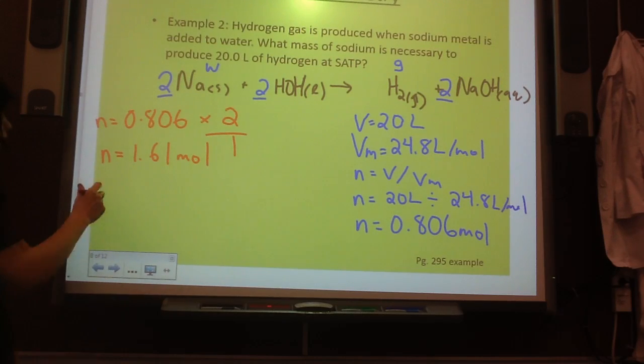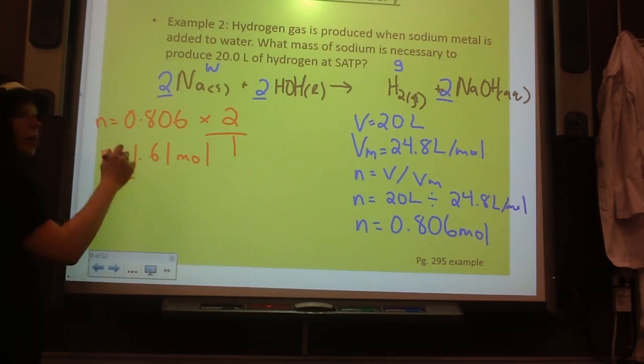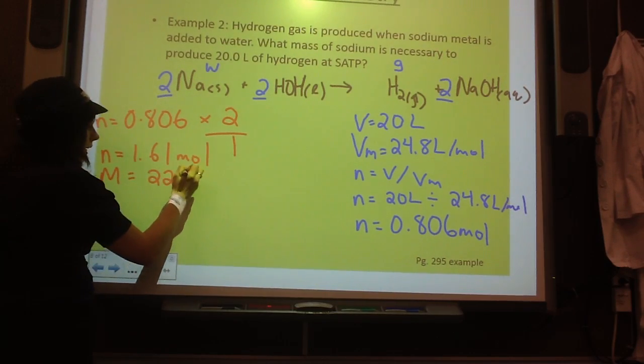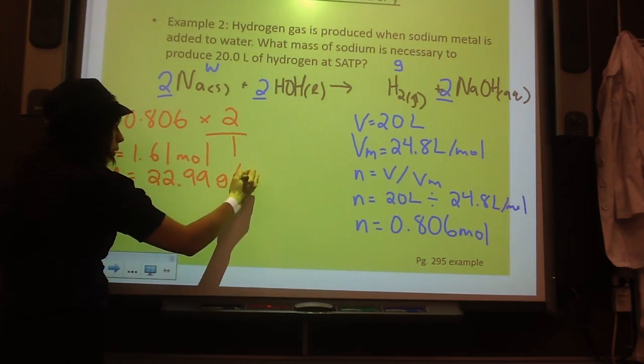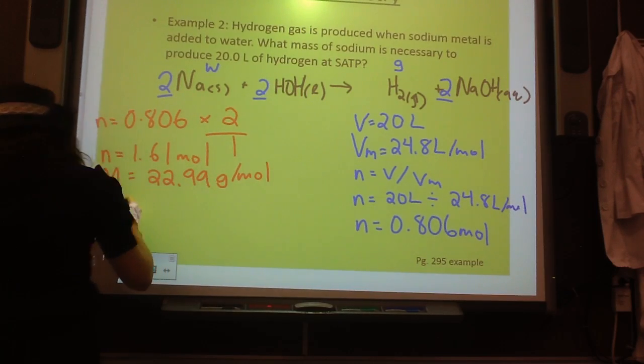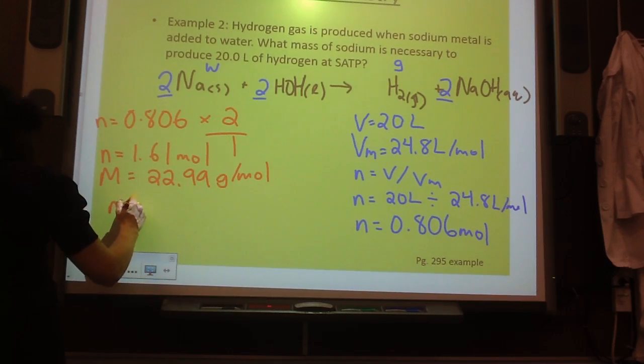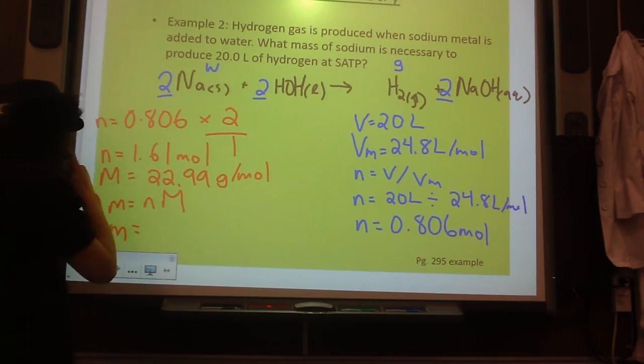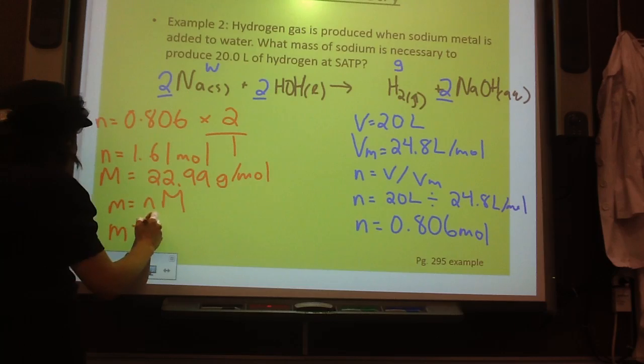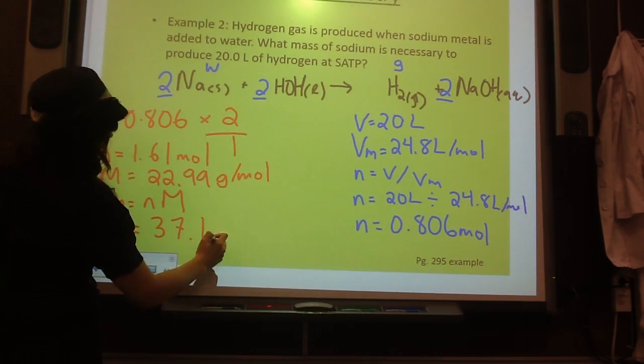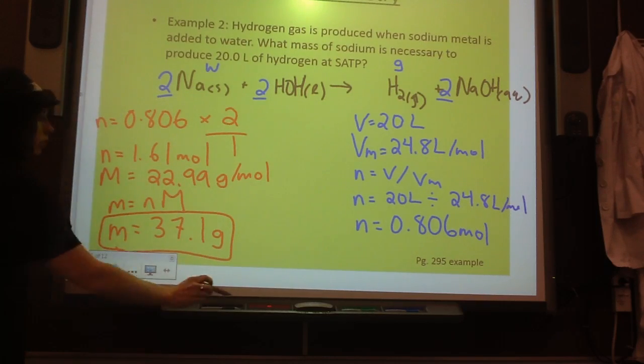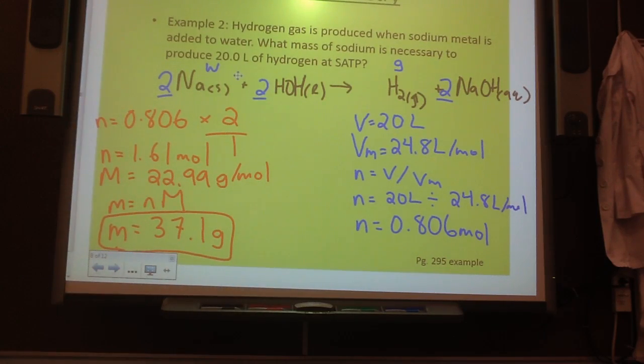Okay, so now your molar mass, that's an easy one. You just look straight at the periodic table. It's a straight up 22.99 grams per mole. So your mass is equal to N times big M, which will be 37.1 grams to sign this. Okay, thank you.